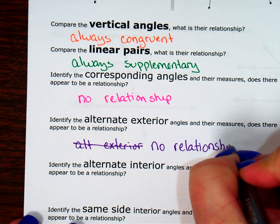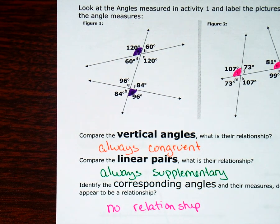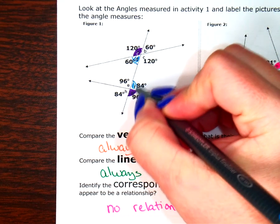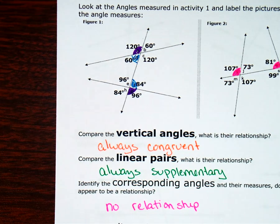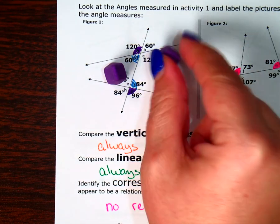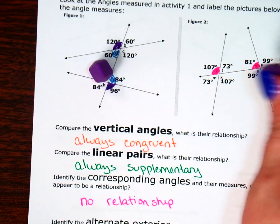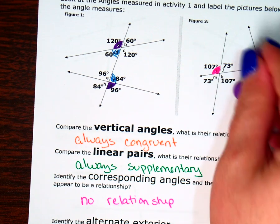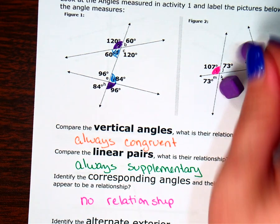Let's look at the alternate interior angles. Those are both inside the two lines and on different sides of the transversal — like this 60-degree angle and this 84-degree angle. 60 and 84 — they're not equal and don't add up to a number we normally use. The other set would be 120 and 96 — those don't have a relationship either. Over here, 73 and 99, and 81 and 107 — no relationship. So my alternate interior angles have no relationship.